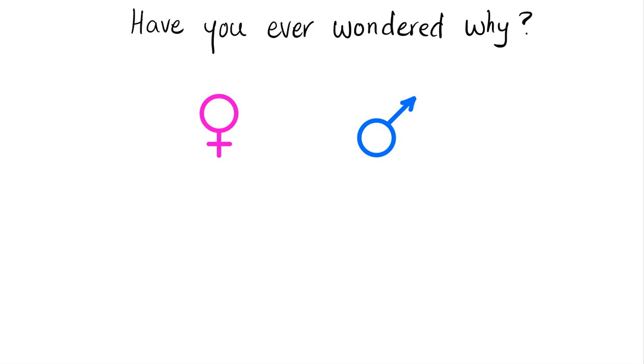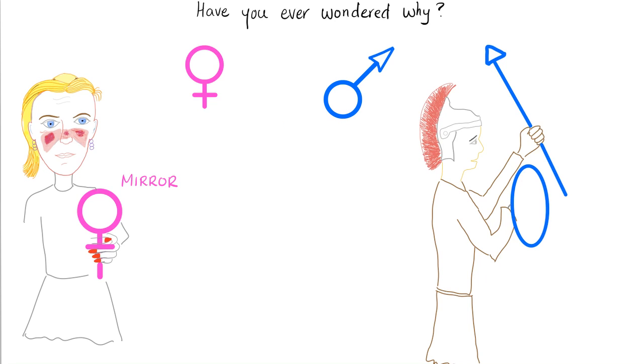Have you ever wondered why do we use this symbol for female and this symbol for male? It's not what you're thinking, Jeffrey. I believe these symbols are kind of something like ancient Greek slash Roman kind of mythology. So, this represents a mirror, which the lady looks at to see if her lupus is getting worse.